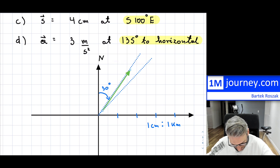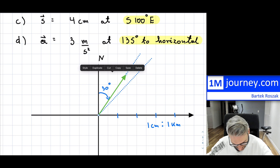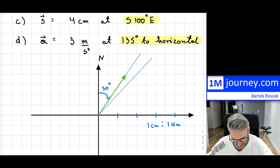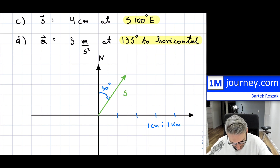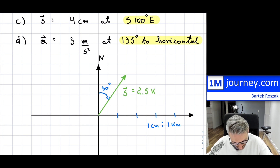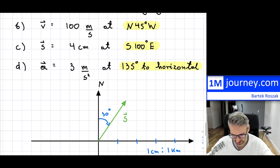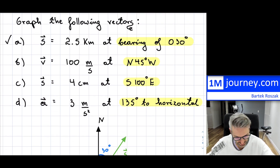There we go — I've got to shift it back into the origin, so that is my vector. Now I can remove these two construction lines, and that would have been my vector. So let's label it S, and this is 2.5 kilometers. So that would have been the first one.